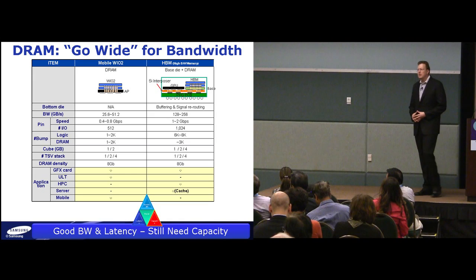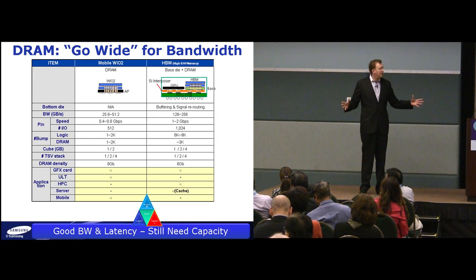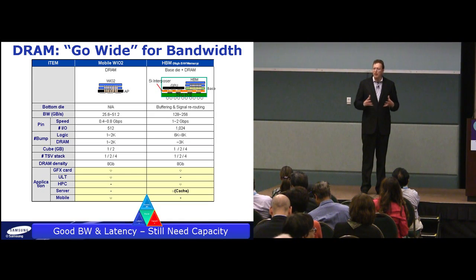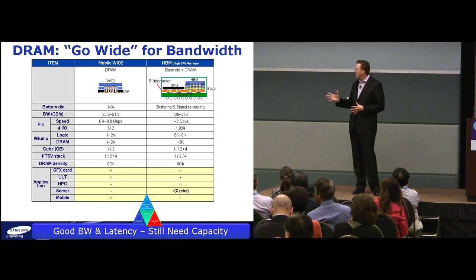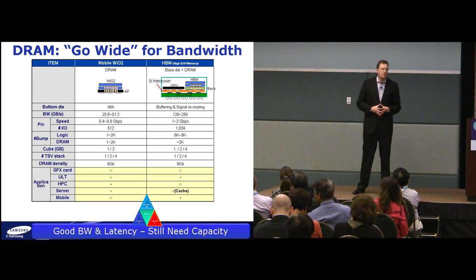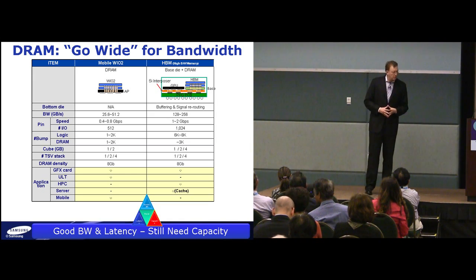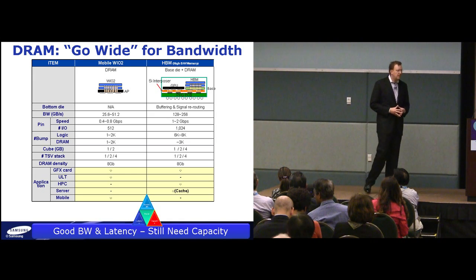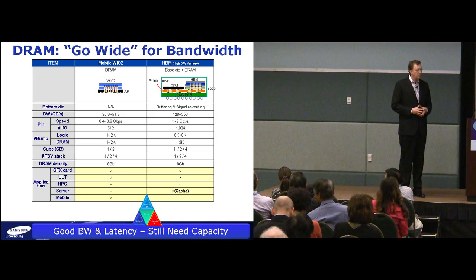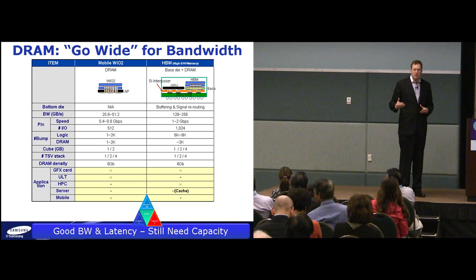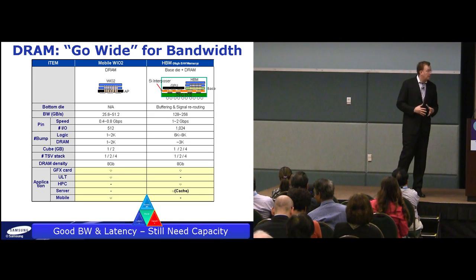One of the ways to solve the bandwidth problem is to go wide. In mobile, the platforms are going to move to wide IO of some sort — initially to low power DDR4 — having high-speed bandwidth close to the processor with bulk memory in a two-tier structure. Servers, I would submit, eventually have to consider a different architecture. If servers go greater and greater in bandwidth, eventually you could adopt something like HBM, though when and how that happens exactly is not clear.